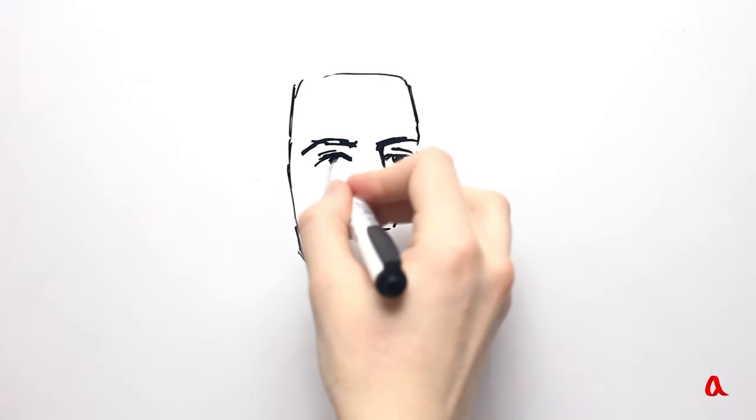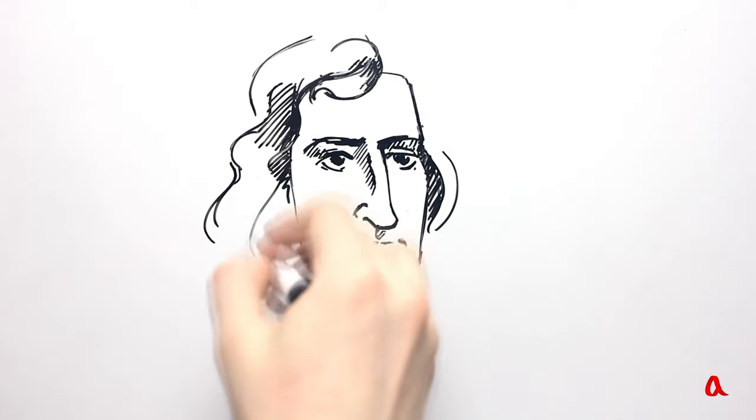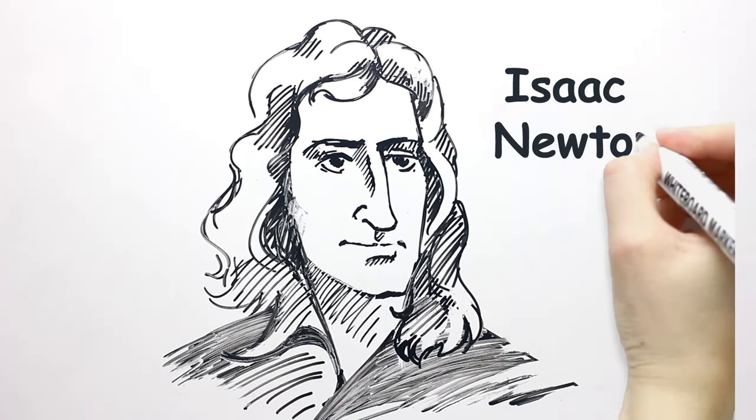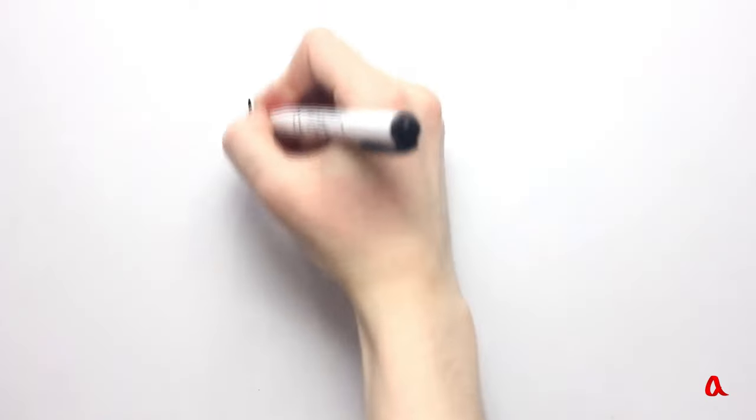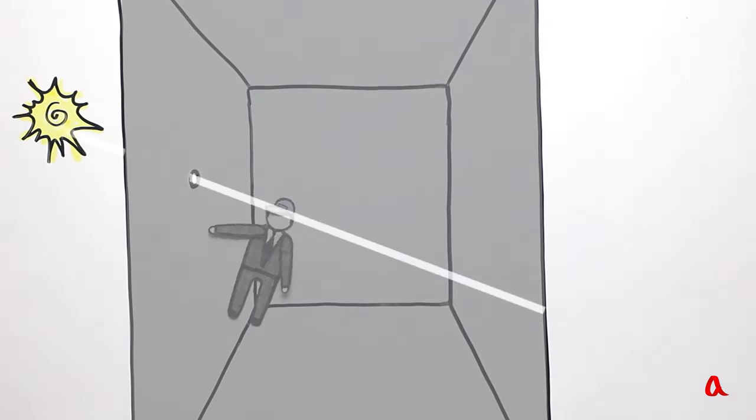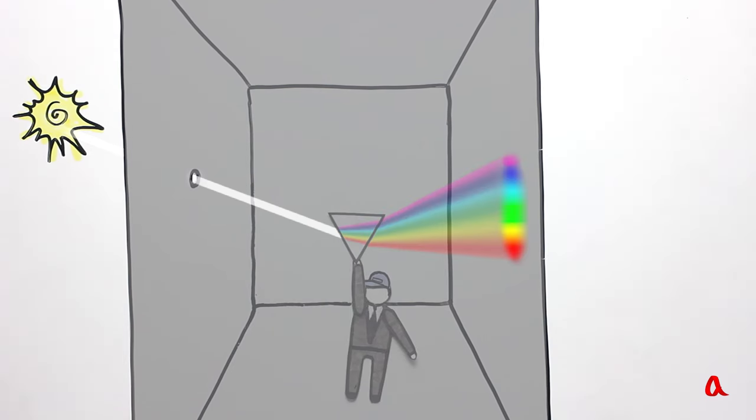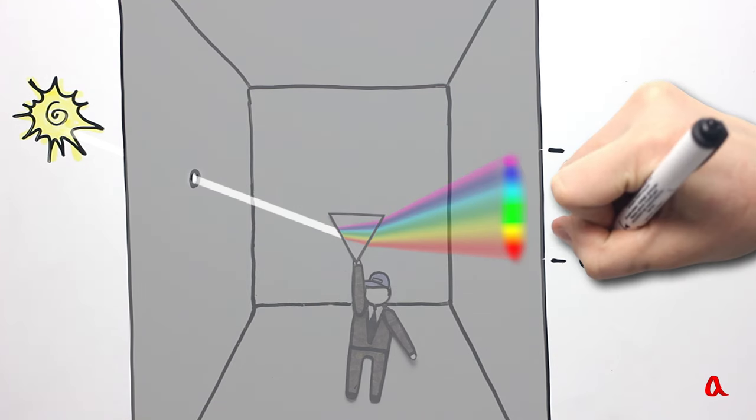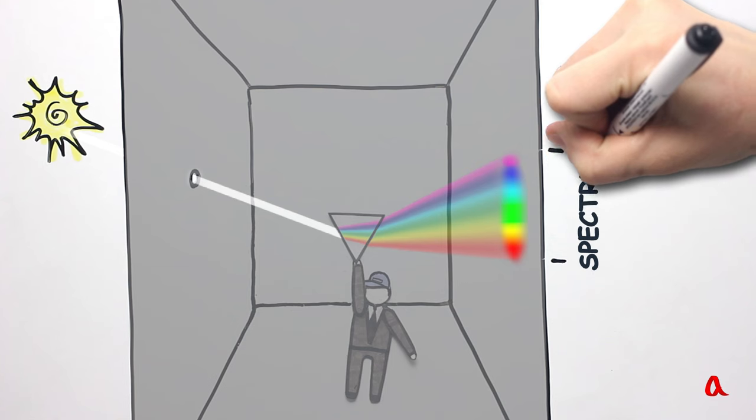Isaac Newton, the great British physicist, was the first to try to explain the emergence of rainbow colors. He let a narrow beam of sunlight into a dark room and put a triangular prism in its way. The light coming out of the prism produces a color stripe which is called a spectrum.